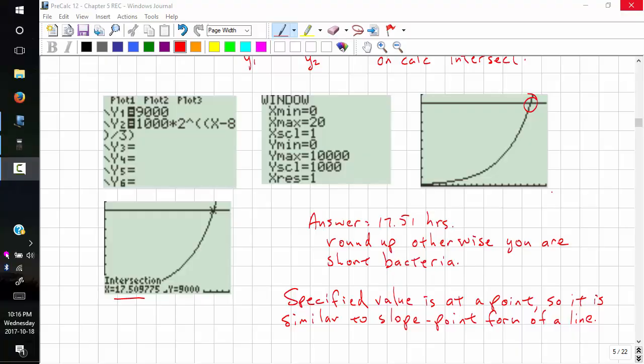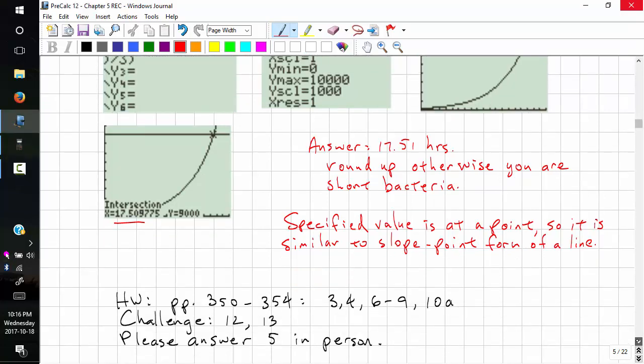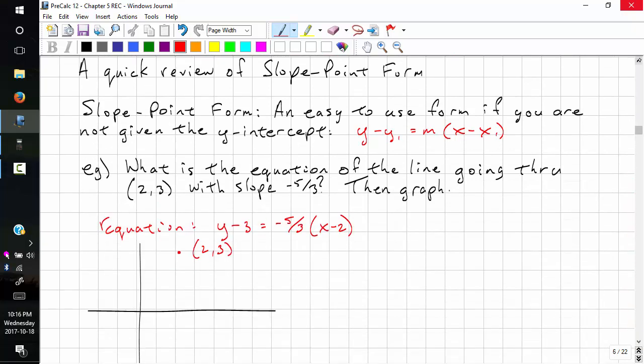This is Pre-Calc 12, Chapter 5.2. We're going to be reviewing Slope Point Form. Slope Point Form is an easy to use form if you are not given the y-intercept. So we have y minus y1 equals m times x minus x1.